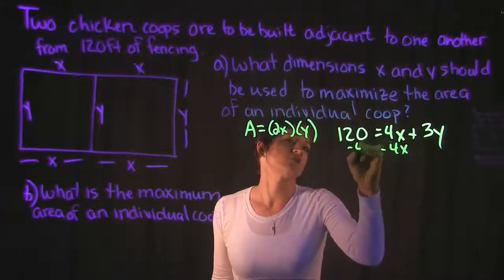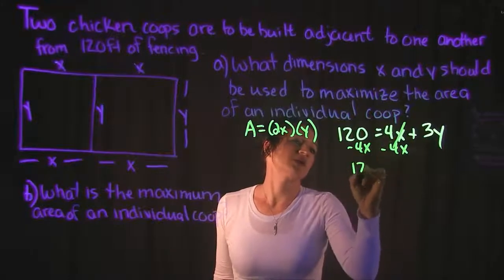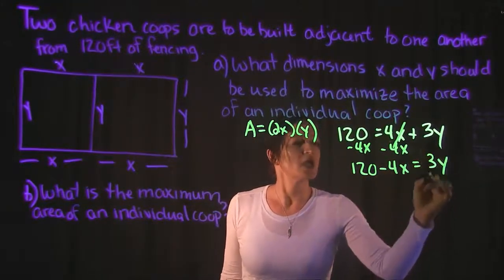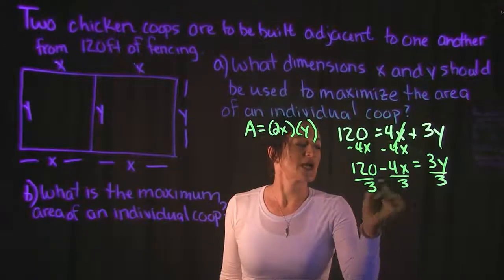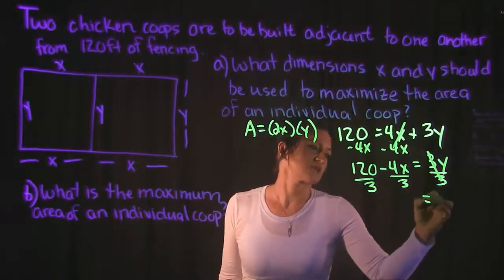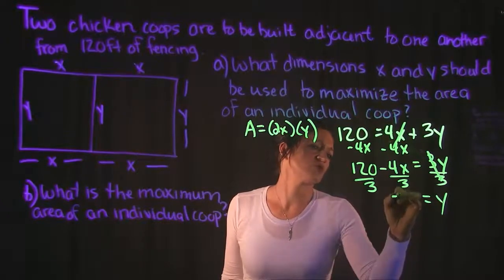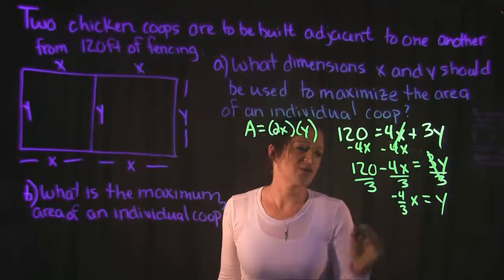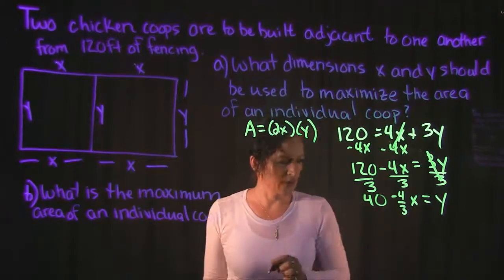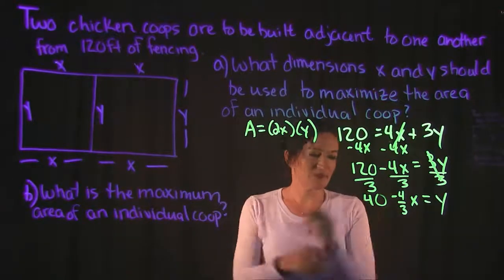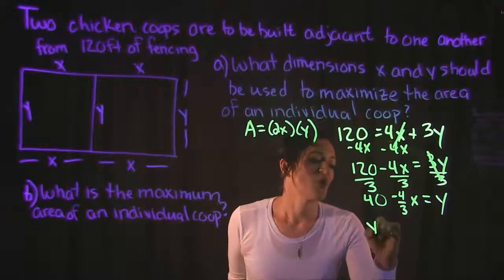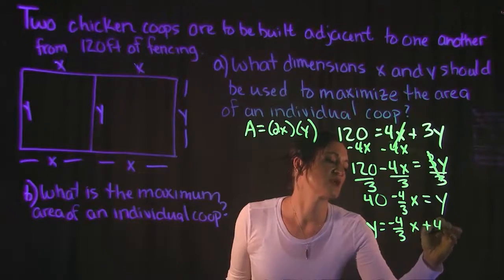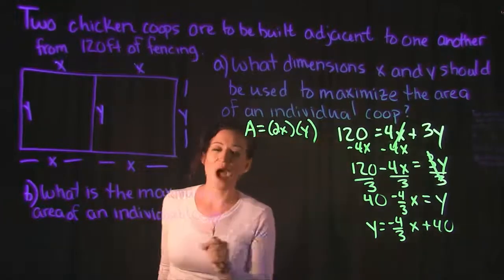Solving the perimeter equation for Y: subtract 4X from both sides to get 120 minus 4X equals 3Y, then divide both sides by 3. That gives Y equals negative four-thirds X plus 40.